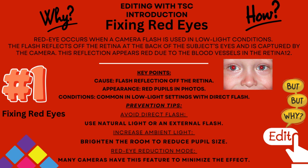Prevention tips: avoid direct flash; use natural light or an external flash; increase ambient light by brightening the room to reduce pupil size. Many cameras also have a red eye reduction mode — a built-in feature to minimize the effect.